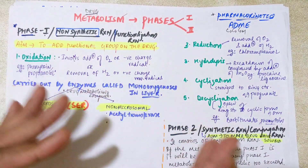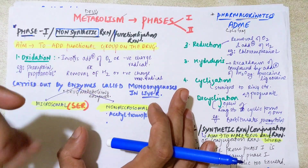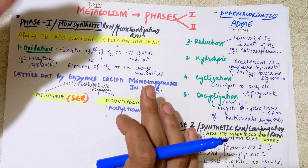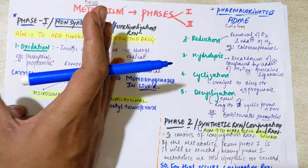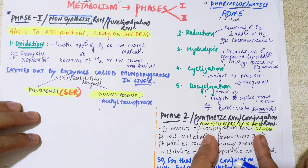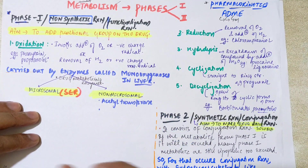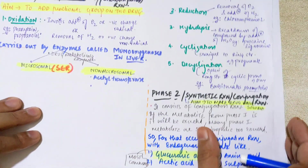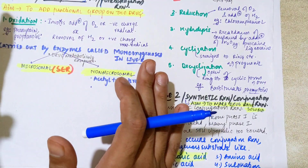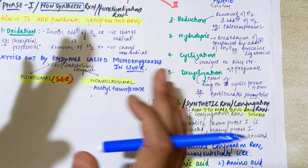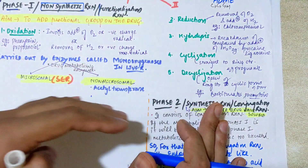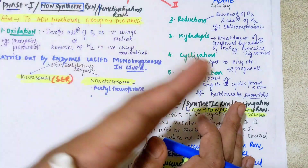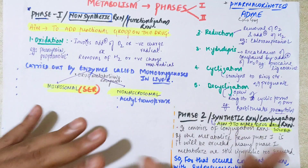Link phase one with phase two: phase one makes the drug sticky by adding a functional group, so the drug can then go to the phase two reaction, called a conjugation reaction. The aim of phase one is to make the drug sticky so that conjugation — using more polar groups like carbohydrate or amino acid groups — can occur in phase two through reactions like acetylation, sulfation, and methylation, making the drug more water-soluble.